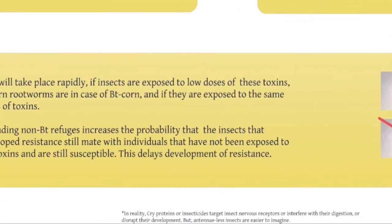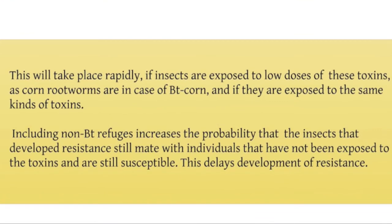This situation will take place very rapidly if insects are exposed to low doses of these toxins, as corn rootworms are in the case of BT corn, and if they are exposed to the same kinds of or similar toxins. These conditions increase selection pressure for individuals that have resistant traits. A lot of what integrated pest management and insect resistance management advocates are practices that slow this process down. In the case of BT and corn rootworms, it is planting non-BT refuges. Including non-BT refuges increases the probability that insects that develop resistance still mate with individuals that have not been exposed to the toxin and are still susceptible, which delays development of resistance.